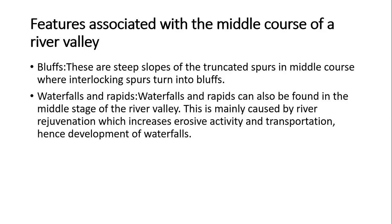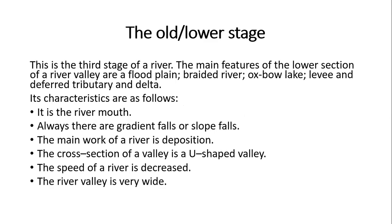Now this is the old or lower stage — the third stage of the river. The main features of the lower section of the river valley are flood plain, braided river, oxbow lake, levee, defeated tributary, and delta.